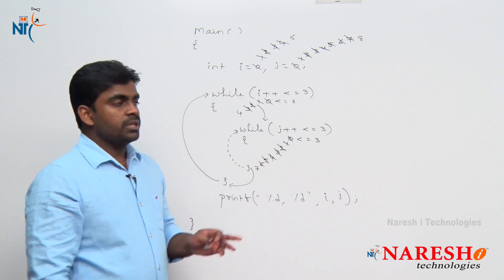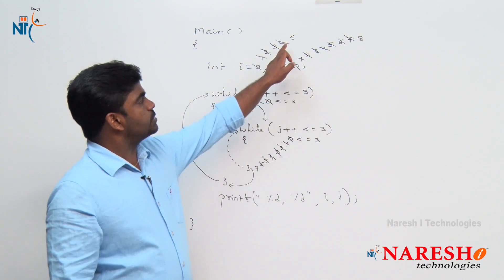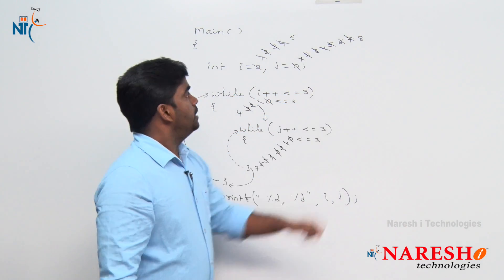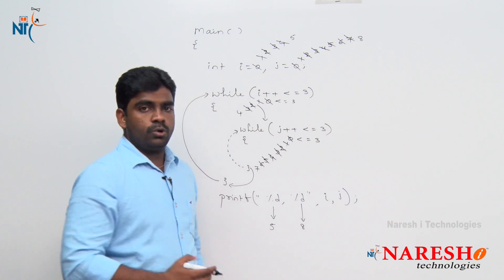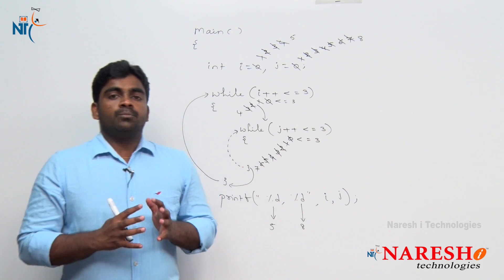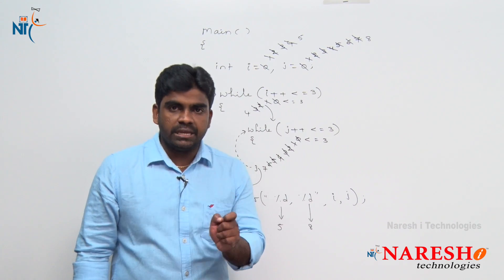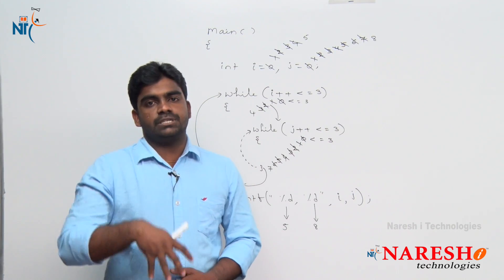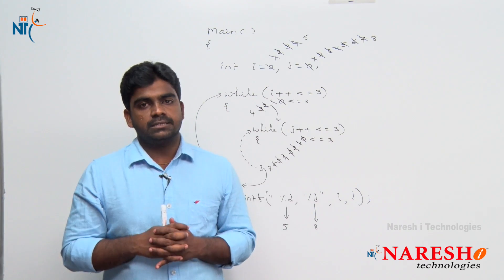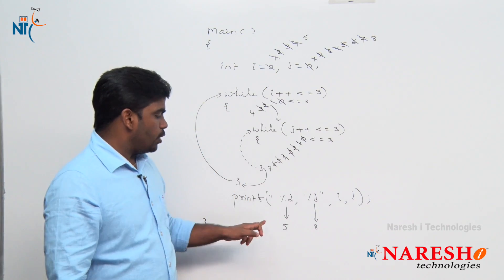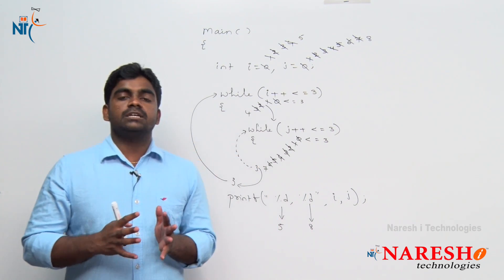If outer while loop has failed, then completely the while loop terminates. Final i value is 5, final j value is 8. We should take care of post-increment and pre-increment execution. Pre-increment: first increase, then substitute. Post-increment: first substitute, then increase. Final output is 5 and 8. This is exactly how nested while loop executes.